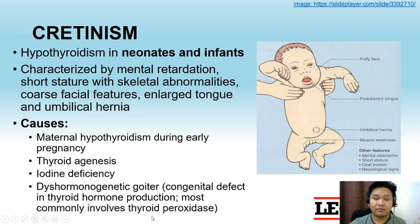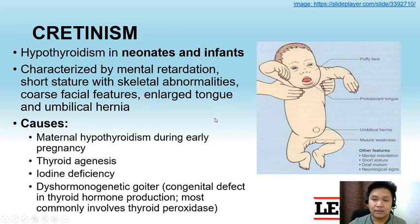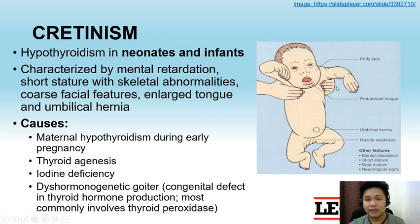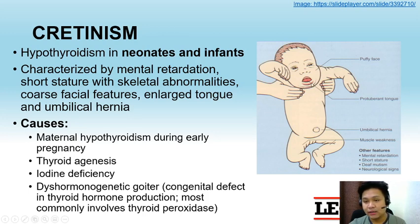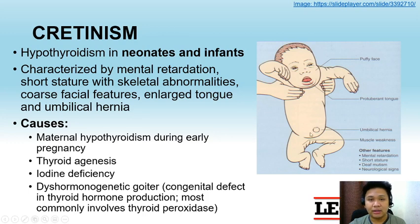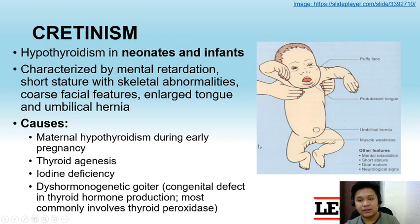The congenital defect most commonly involves the enzyme thyroid peroxidase. In this illustration, you can see the manifestations of Cretinism: coarse facial features, a protuberant tongue due to enlargement of the tongue, umbilical hernia due to enlargement of the organs, and muscle weakness and mental retardation.